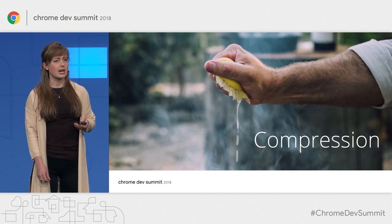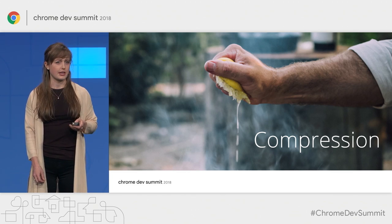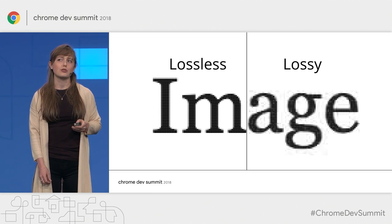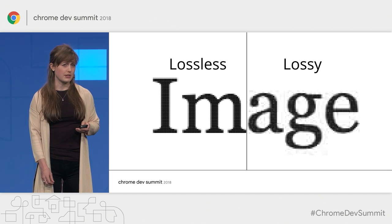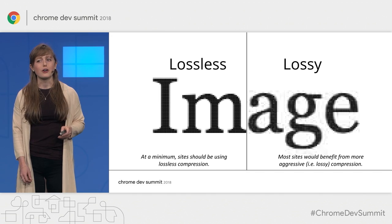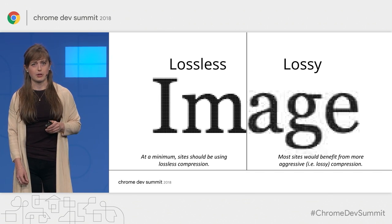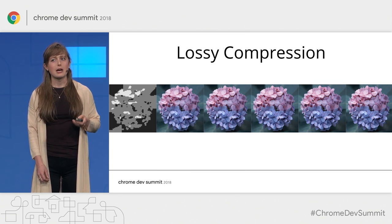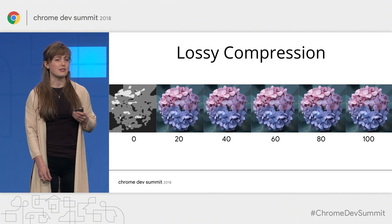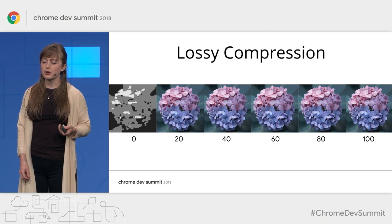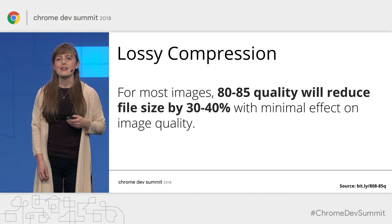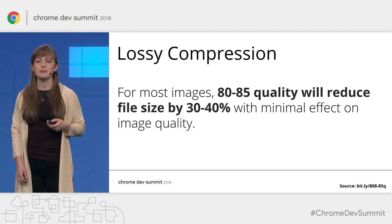Image compression is a topic tightly coupled to image formats, and compression algorithms are specific to the formats they compress. All image compression algorithms can be broken down into lossless and lossy compression. Lossless compression results in no loss of data; lossy compression does result in loss of data but can achieve greater file size savings. At a minimum, all sites should be using lossless compression. However, for most people it makes sense to use lossy compression. The trick is finding the sweet spot between file size savings and image quality. Many lossy compression tools use a scale of 0 to 100; we recommend trying a quality level of 80 to 85, which typically reduces file size by 30% to 40% while having minimal effect on image quality.